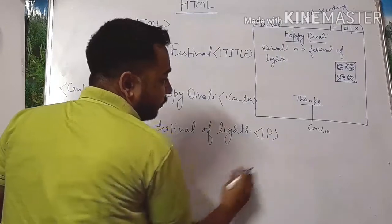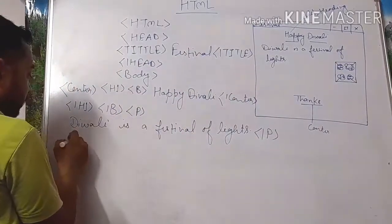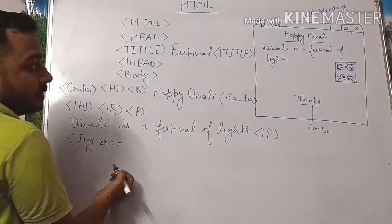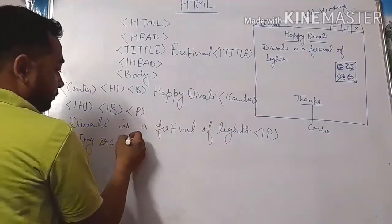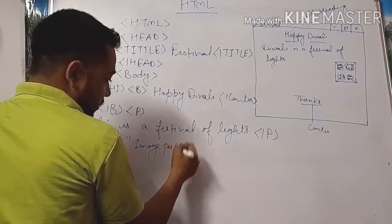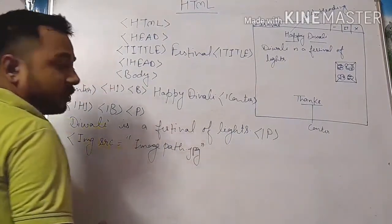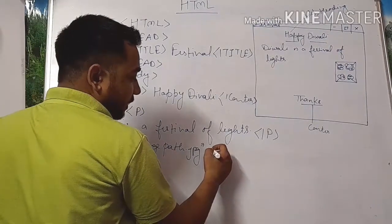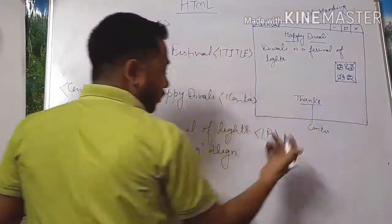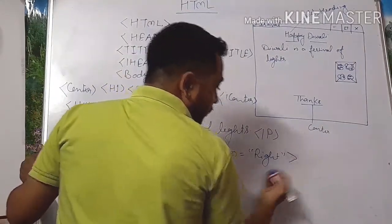Next, to insert this image, we put tag img src equals, then this image path, then dot jpg. Close the tag. Then align your image to the right side, so align equals right. Now close it.